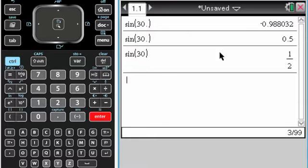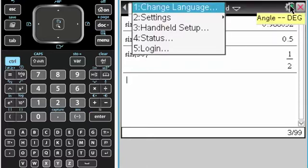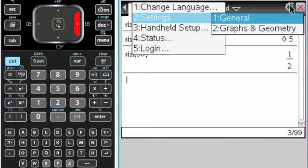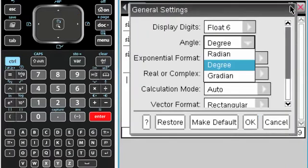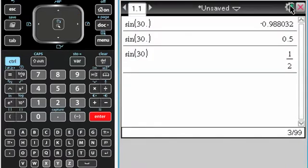If I change it back, so another way to change is if I click up here, settings is one of the options. I'm going to change to radians. Okay. Now I'm in radian mode.